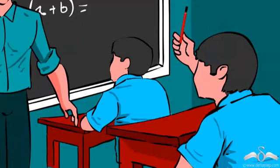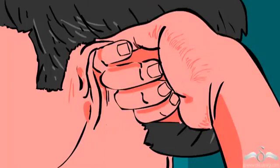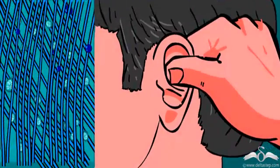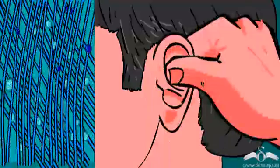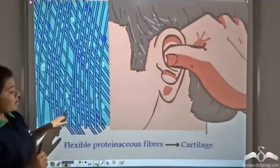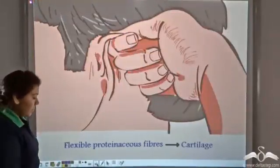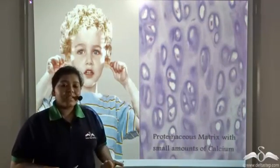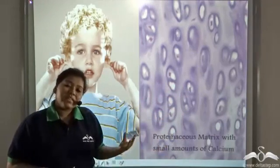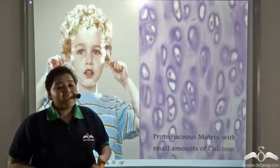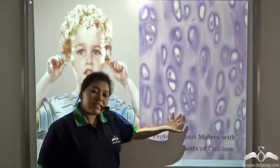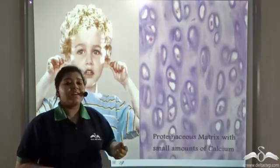Bones provide toughness to our body, but why are our ears so flexible? This is because our ears contain flexible, proteinaceous fibres known as cartilage. This is what a cartilage looks like — it is elastic and flexible, and made up of proteinaceous fibres. Cartilage is softer than bones because their matrix contains calcium in smaller amounts. Since calcium is present in lesser amounts in cartilage tissue, cartilages are less hard than bones.